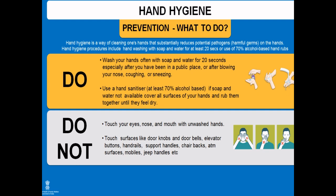How do we prevent it? Hand hygiene is a way of cleaning one's hands that substantially reduces potential pathogens. The procedure includes hand washing with soap and water for at least 20 seconds, or use of 70% alcohol-based hand rubs. Wash your hands often, especially after being in a public place or after blowing your nose, coughing, or sneezing. Avoid touching your eyes, nose, and mouth with unwashed hands. Avoid touching high-touch surfaces like doorknobs, doorbells, elevator buttons, and support handles, as these may lead to the spread of the virus.